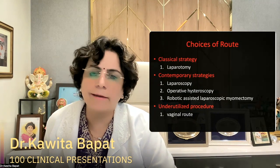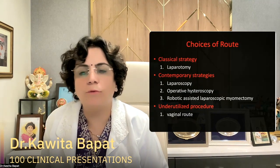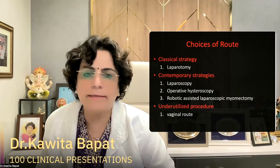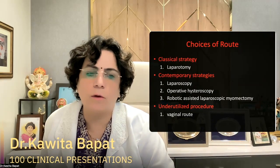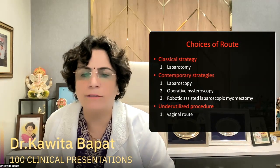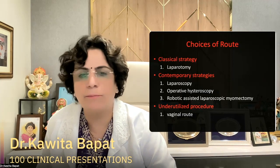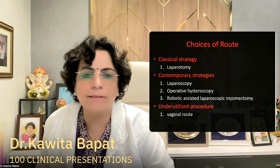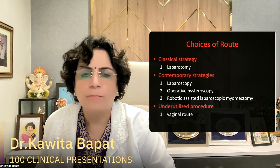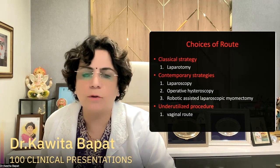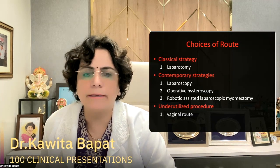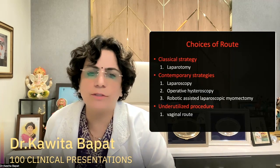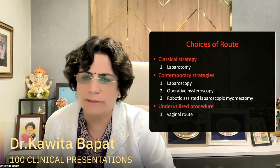What are the choices of route when we want to remove the fibroids? Number one is the classical strategy by laparotomy — the older approach for removing large fibroids by opening the abdomen. Contemporary strategies include laparoscopy, operative hysteroscopy, and robotic-assisted laparoscopy. But the underutilized procedure is basically the vaginal route.